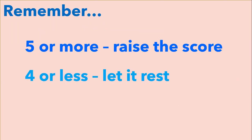Remember, if the number to the right is five or more, you want to raise the score or increase by one — either ten, hundred, or thousand — depending on the place value you are rounding to. If the number to the right is four or less, you're going to keep that number that you're rounding to the same.